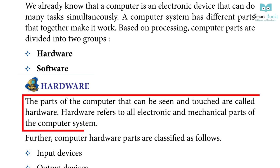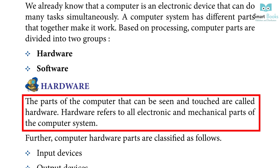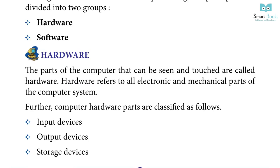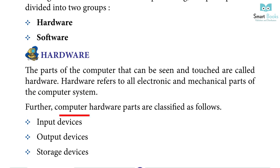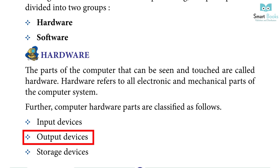The parts of the computer that can be seen and touched are called hardware. Hardware refers to all electronic and mechanical parts of the computer system. Computer hardware parts are classified as: Input Devices, Output Devices, and Storage Devices.